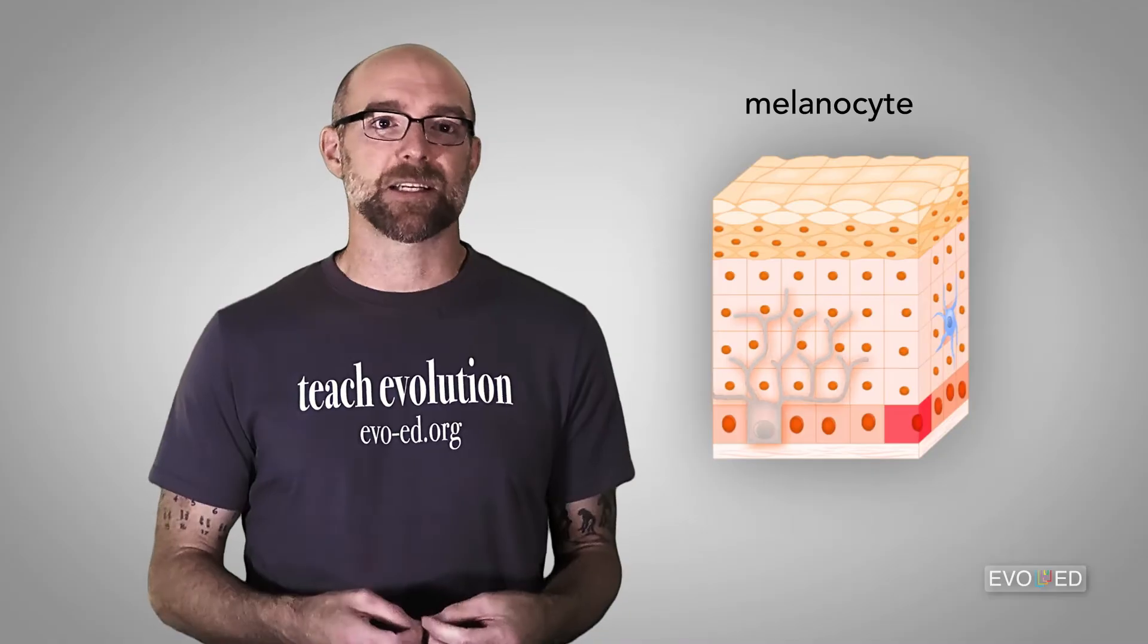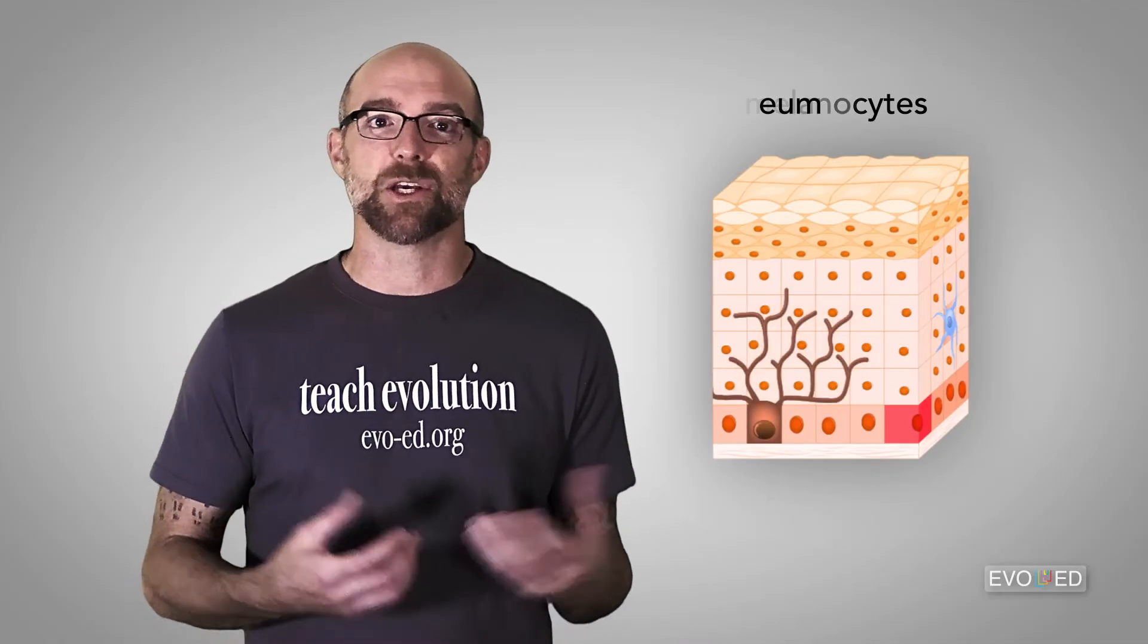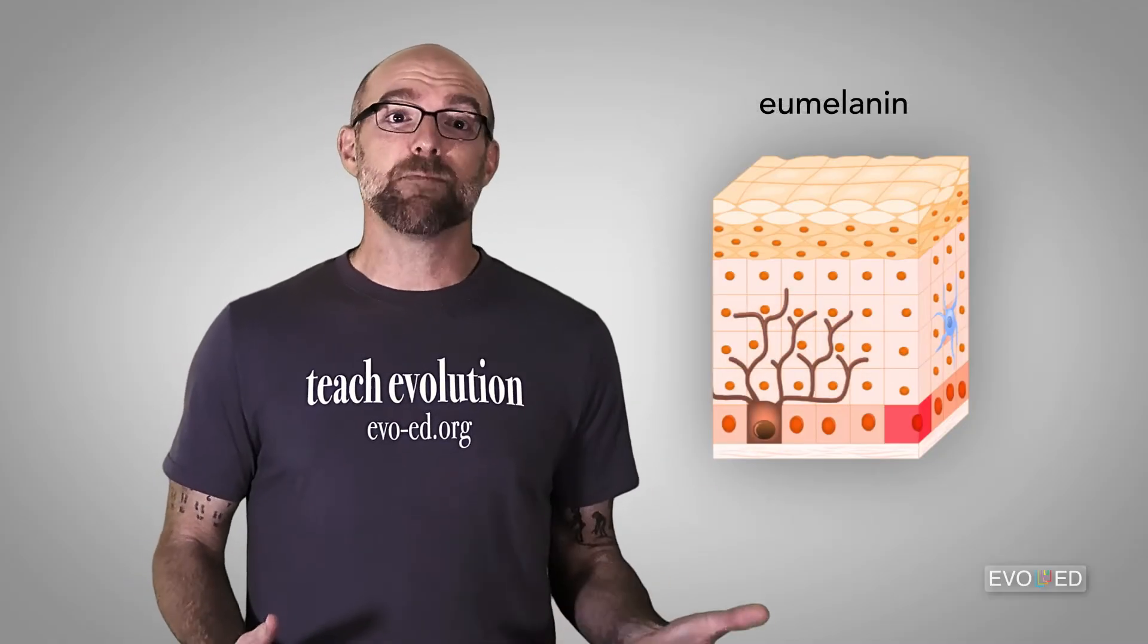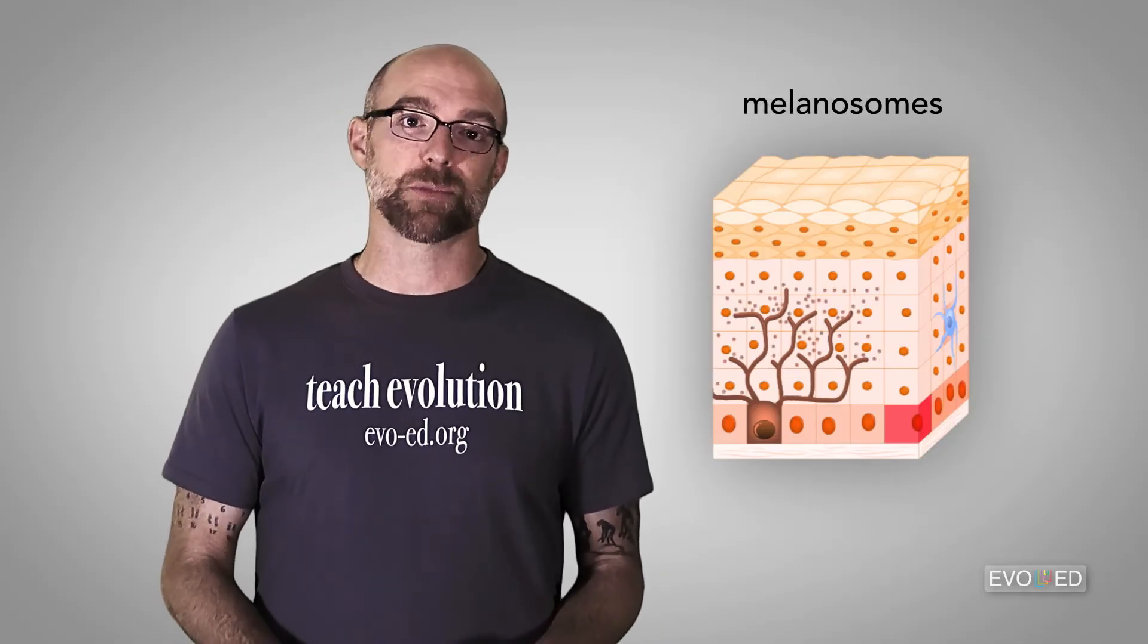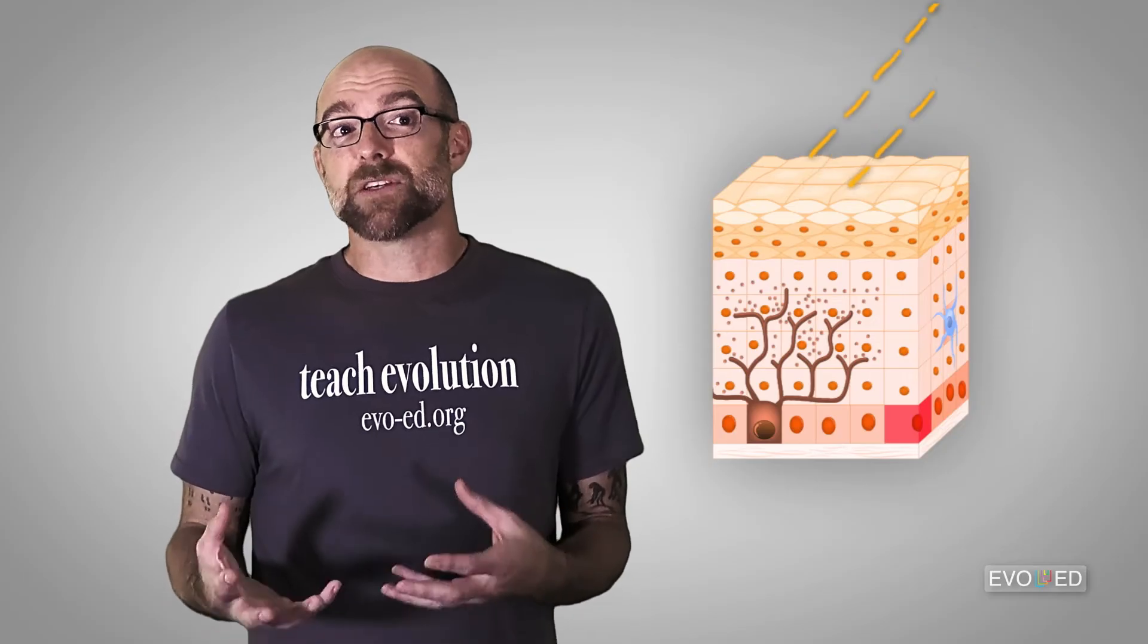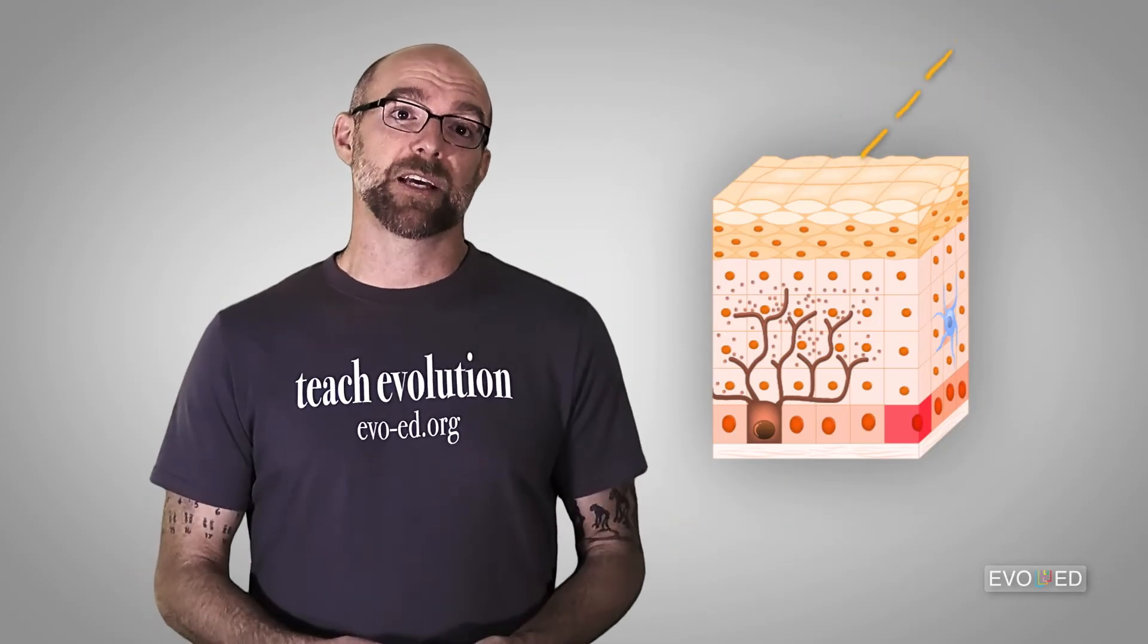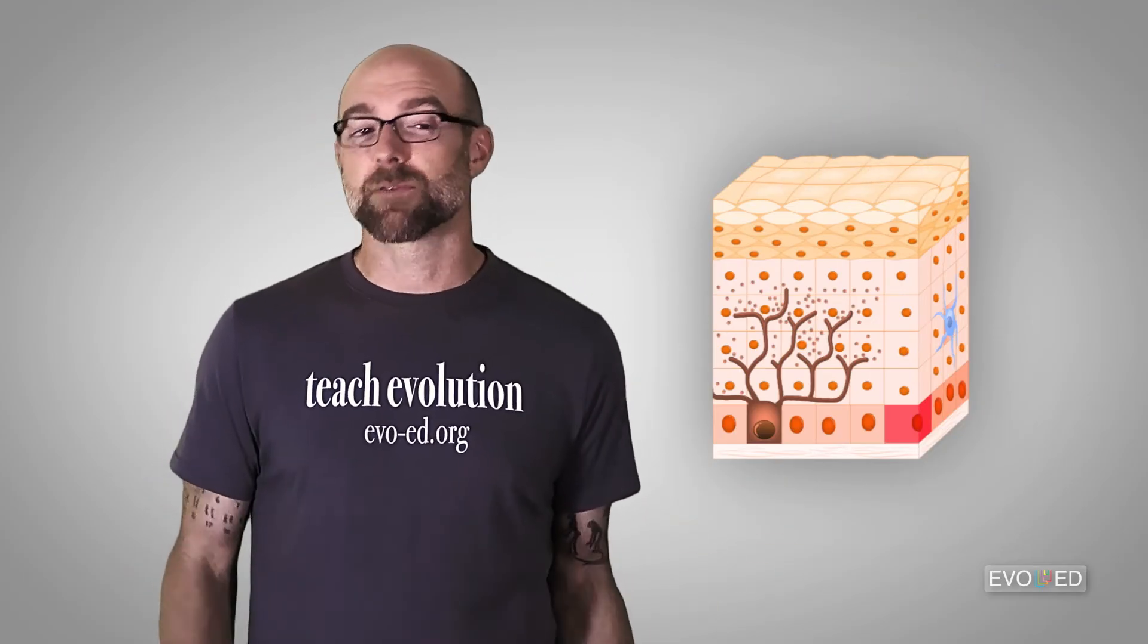Specialized cells called melanocytes produce dark pigment known as eumelanin. This eumelanin is exported to surrounding cells in special packets called melanosomes. The eumelanin intercepts the UV solar radiation before it can damage DNA, thereby protecting you from cancer.